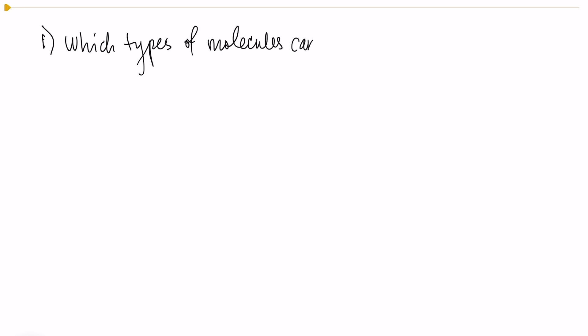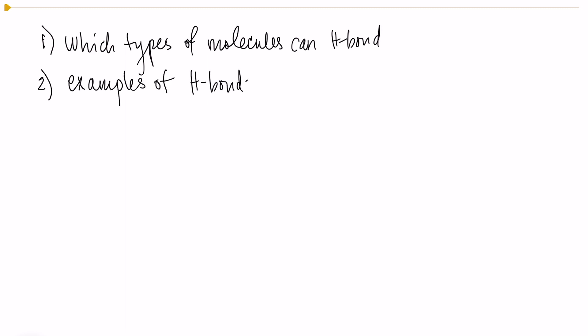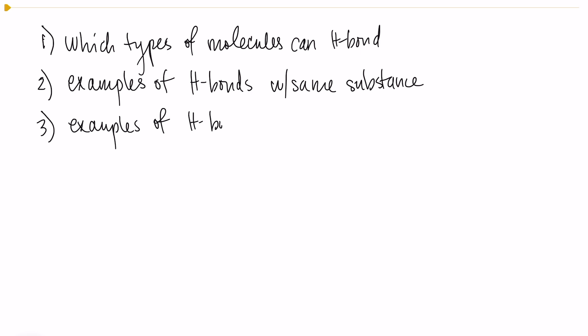I want to begin by talking about first, which types of molecules can hydrogen bond. Second, I want to show you some examples of hydrogen bonding with the same substance, like just a single substance. And then I want to show you some examples of hydrogen bonding with mixtures.